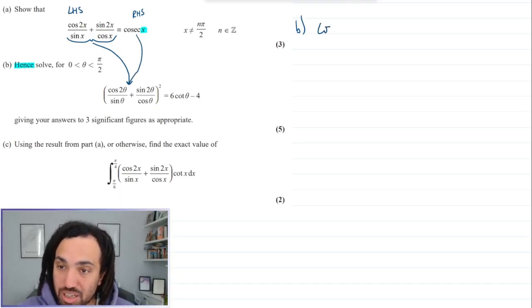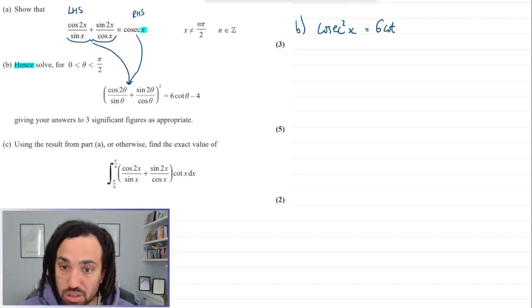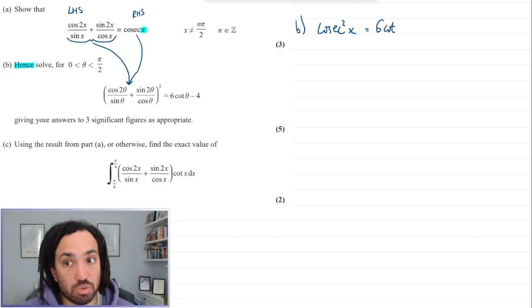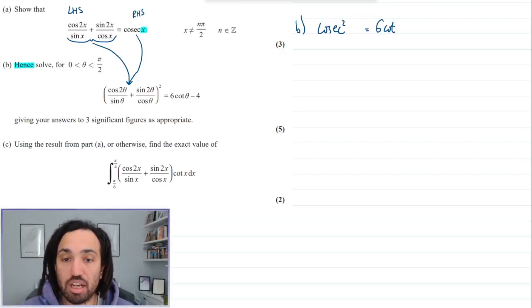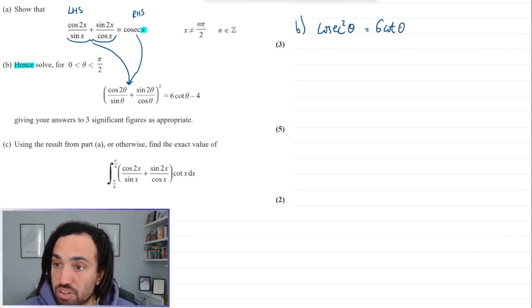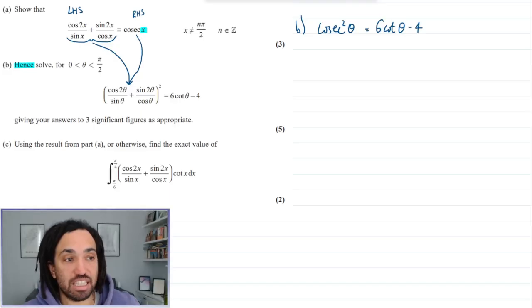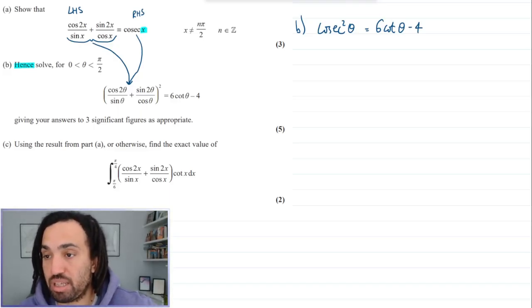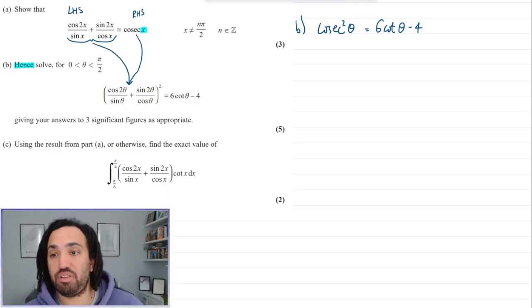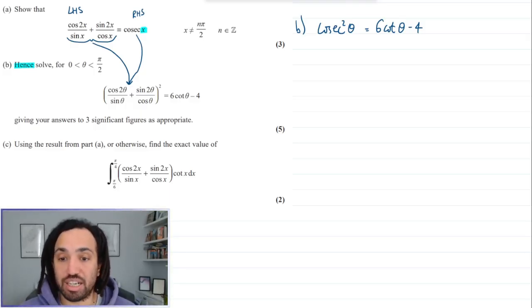Equals 6 cot theta minus 4. Okay lovely, so that is the equation I need to solve and we need to swap out this cosec using our identity. Now if you don't remember the identity then you're not alone because I never remember it either, but what I do remember is of course sin squared plus cos squared is equal to 1.